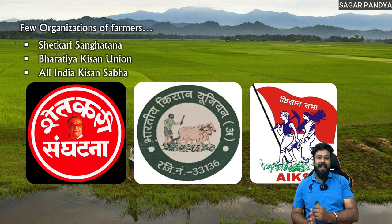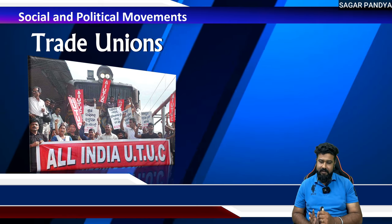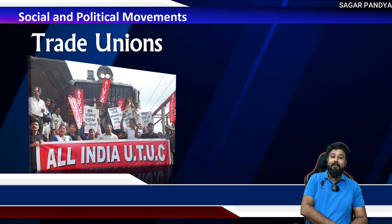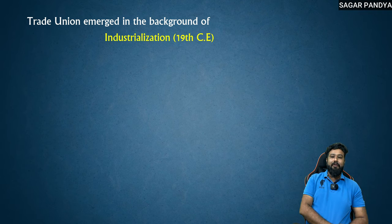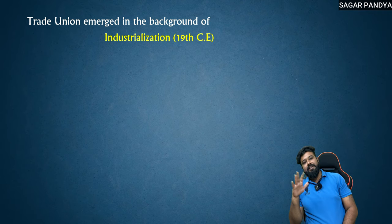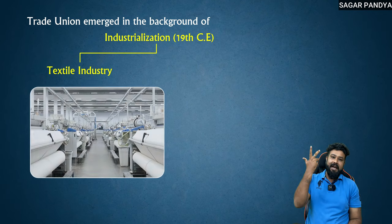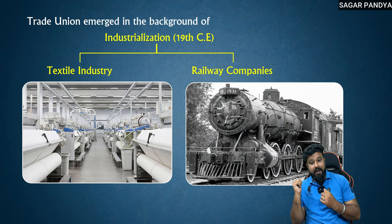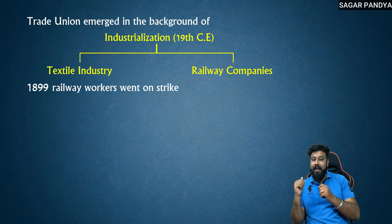Moving to the next movement — trade unions. We had seen trade unions in 9th standard, at the time of the mill workers strike. Trade unions basically emerged in the background of industrialization. During the era of industrialization, industries were built — like garment and textile industries, automobile industries making cars and railway engines — and in 1899, railway workers went on strike.